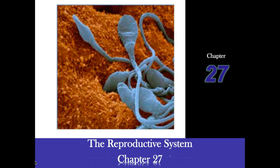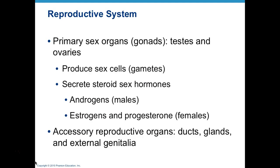Hello everyone and welcome to your chapter 27 prep screencast on the reproductive system. The primary sex organs, also known as gonads, are going to be the testes in a male and ovaries in a female. They are responsible for producing sex cells, which are known as gametes — the egg in the female and sperm in the male. They also secrete steroid sex hormones: androgens like testosterone in males, and estrogen and progesterone in females. We will also have lots of accessory reproductive organs such as ducts, glands, and external genitalia.